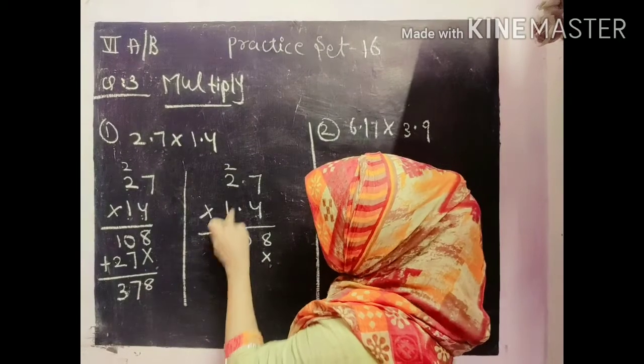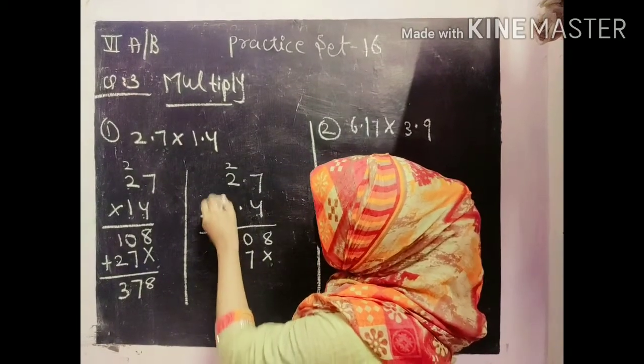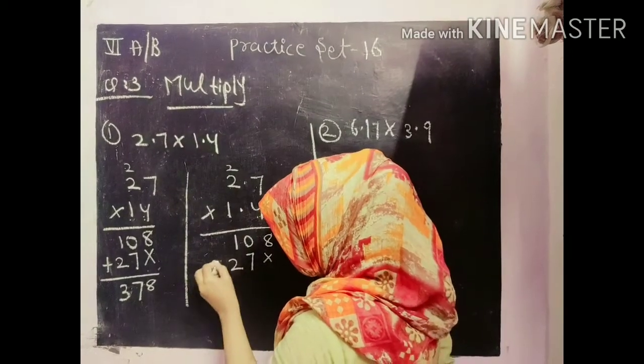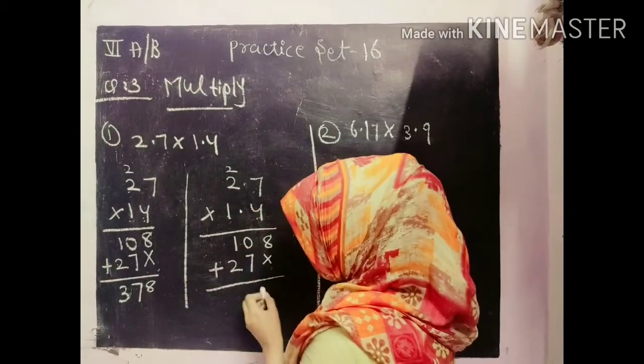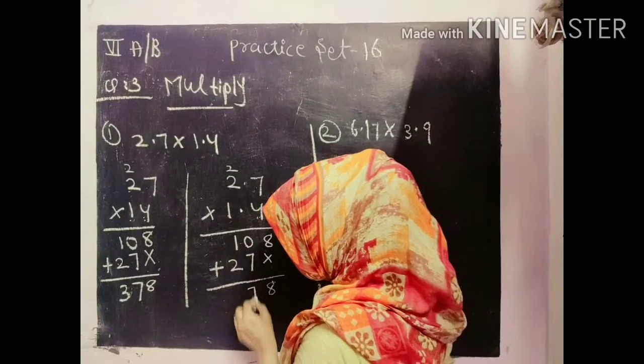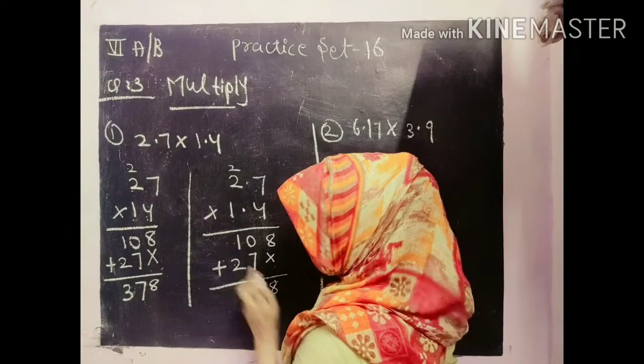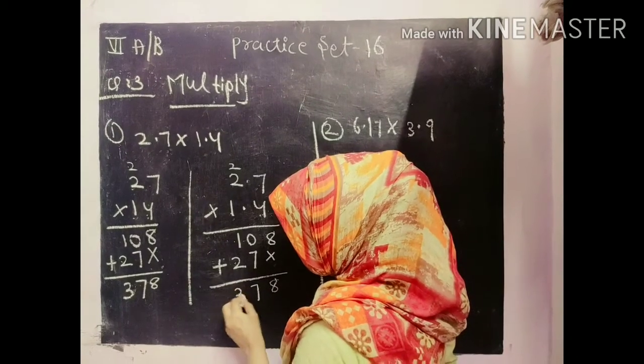Again we will put which sign? Multiply sign. 7 ones are 7. And 2 ones are 2. Plus. 8, 7, 2 and 1. How many? 3.